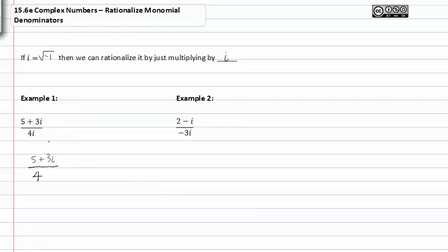It's like having five plus three i over four times the square root of negative one. And this is bad because we don't ever want radicals left in our denominators. So to get rid of them, we use this trick called multiplying the numerator and denominator by i.